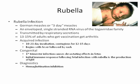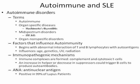Rubella is also known as German measles — it can be transmitted through the placenta and cause severe issues with the baby. Autoimmunity is an undesirable consequence of the immune system getting out of hand. Organ-specific diseases include Hashimoto's thyroiditis and Type 1 diabetes, where autoimmune antibodies target the beta cells in the islets of Langerhans. Mid-spectrum disorders include idiopathic thrombocytopenic purpura and multiple sclerosis. Factors influencing autoimmunity: age, genetics, and UV radiation. Immune complexes cause most organ damage, with complement and cytotoxic T cells involved.